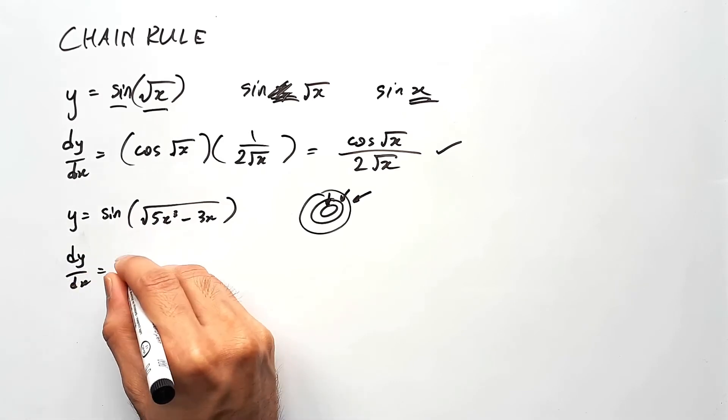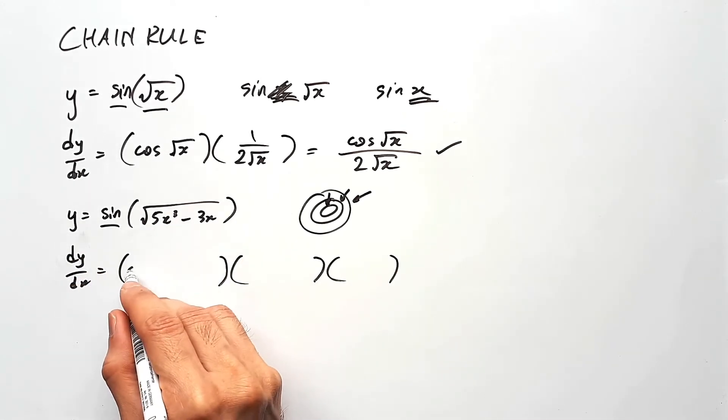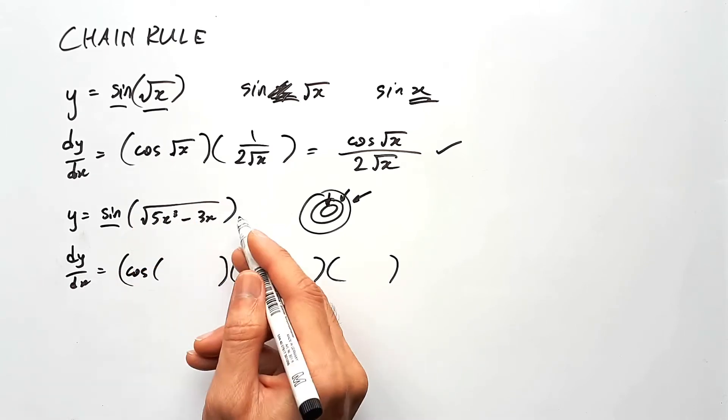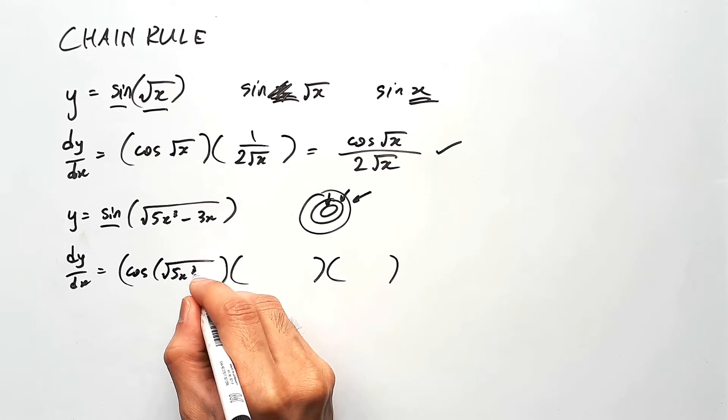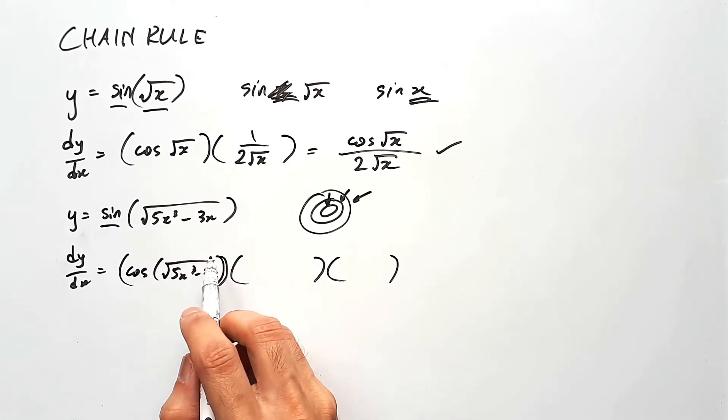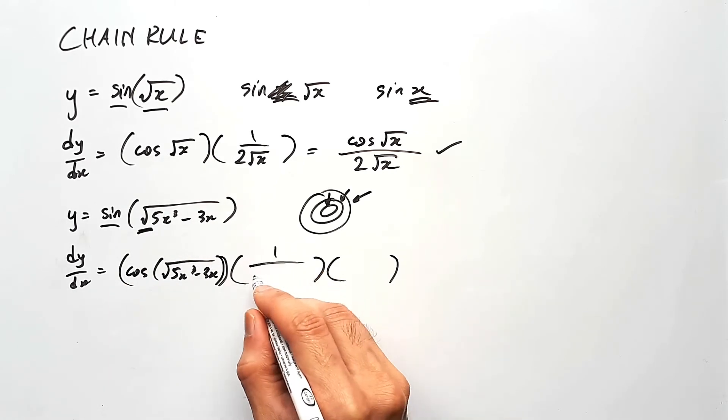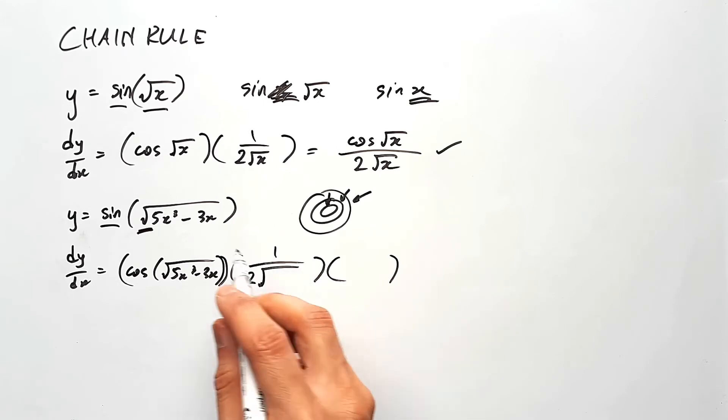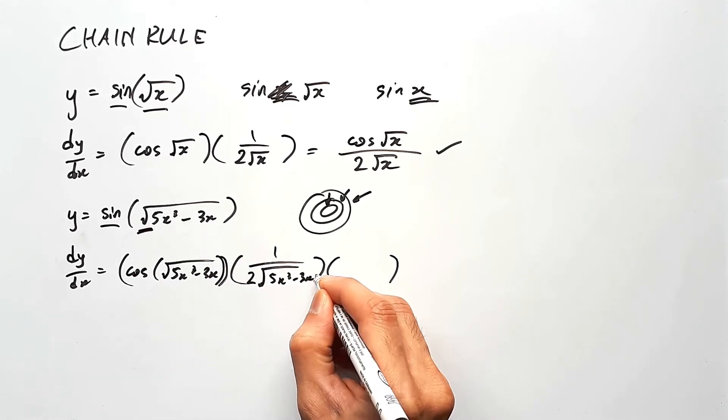So the dy on dx of this will have three brackets, the first dealing with the sine. So that's going to be cos of whatever is inside sine. In this case, that's just going to be square root of 5x cubed minus 3x. And then the next step is to deal with the square root. So the square root is going to become 1 over 2 root of the inside of that. So that's going to be still 5x cubed minus 3x.